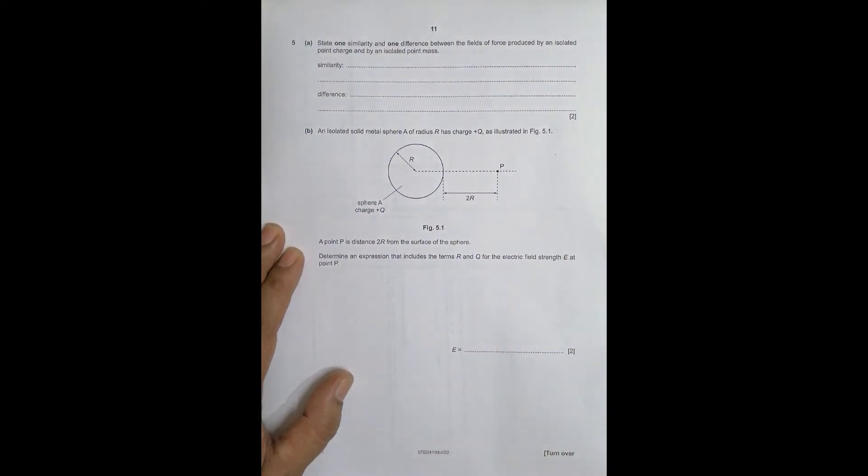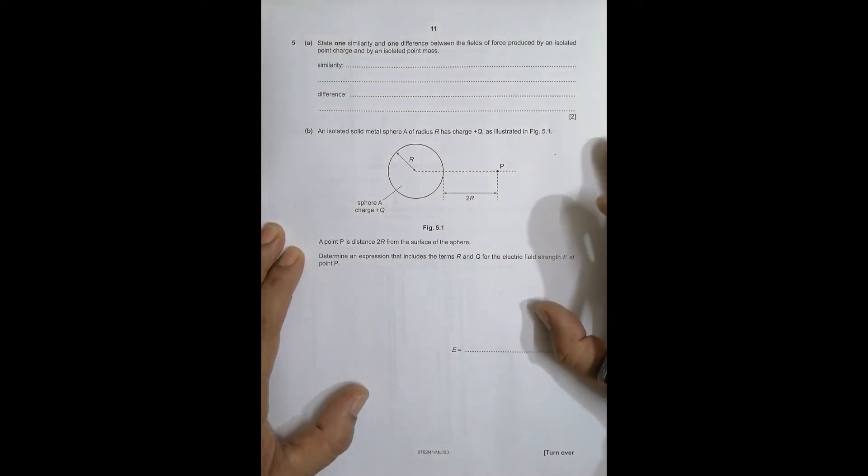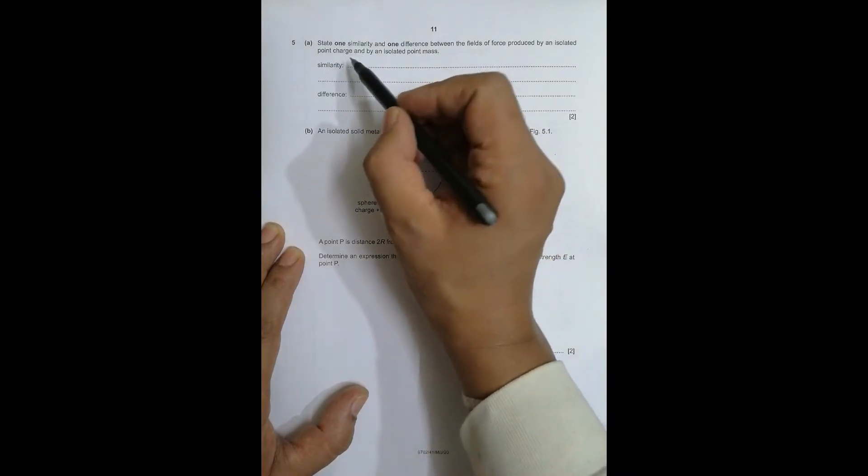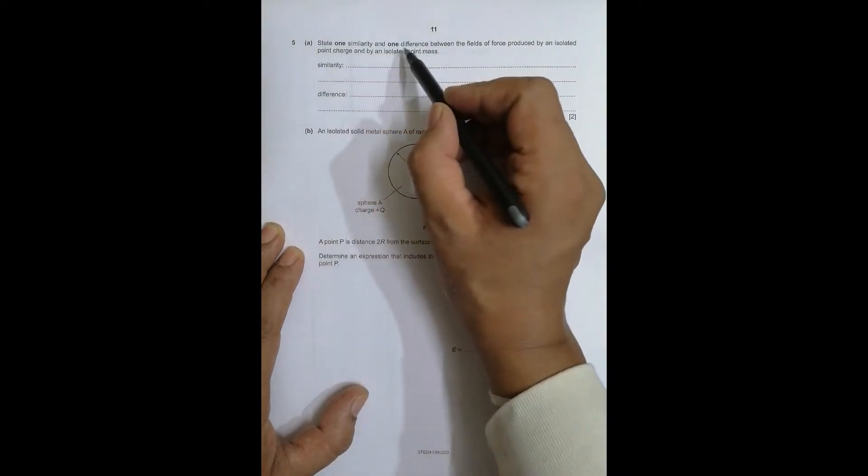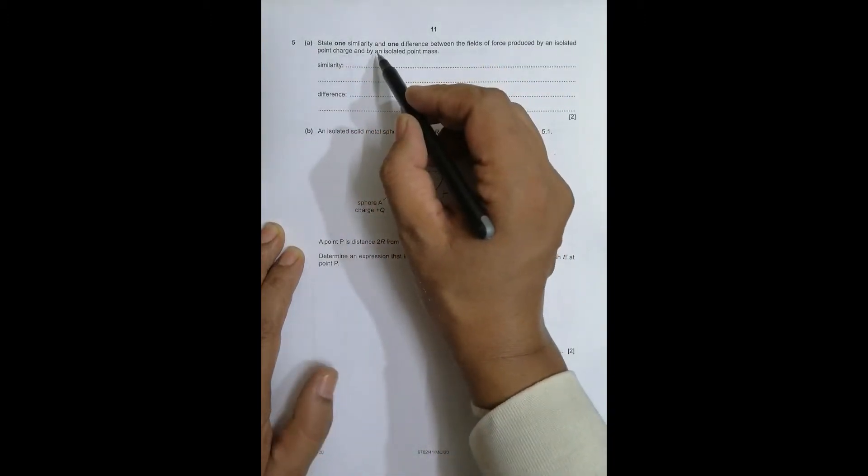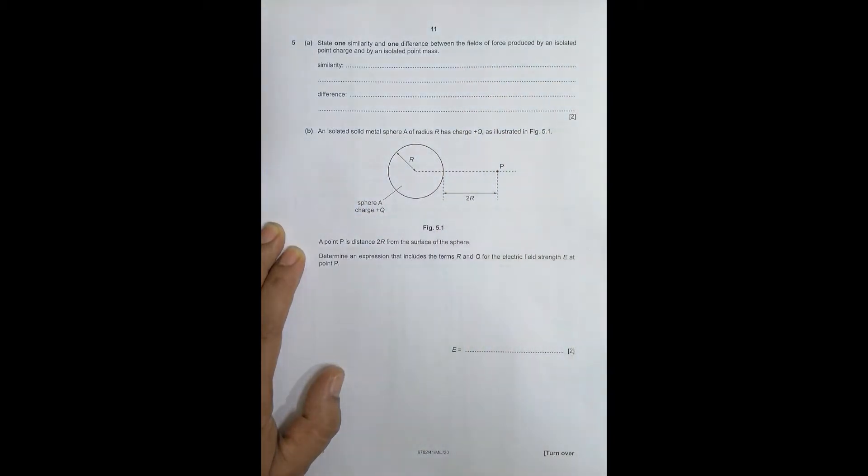Hello folks, today it is May/June 2020 paper 4, question number 5. This question is concerned with the chapter on electric fields. The first part asks you to state one similarity and one difference between the fields of force produced by an isolated point charge and by an isolated point mass.